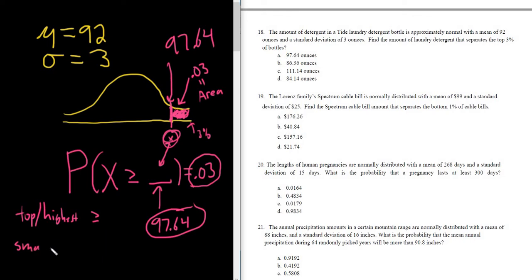If it says smallest, lowest, just pick less than. And I say less than, I mean less than or equal to, but in the normal calculator, it only lets you pick greater than or equal to or less than or equal to. So top, highest, biggest, pick greater than. Smallest, lowest, shortest, pick less than.